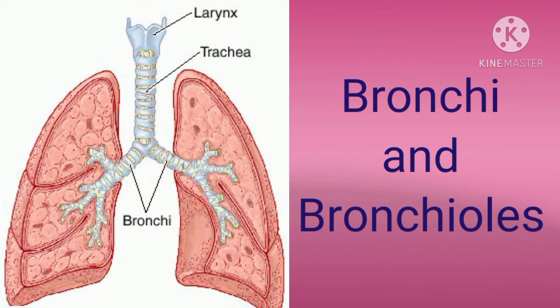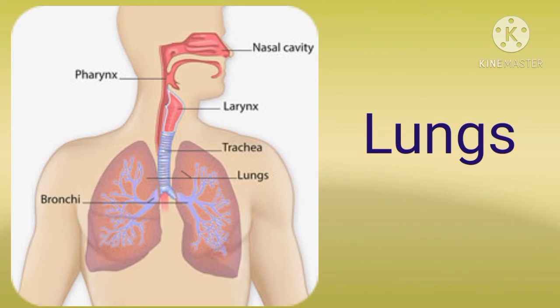Now we discuss about the bronchi and bronchioles. The trachea runs in the middle of the chest up to a short distance between the two lungs, where it divides into two bronchi. The singular of bronchi is called bronchus — the left bronchus and right bronchus. After passing through the trachea, the air enters each bronchus and finally enters the lung. In the lungs, air is pulled into the fine branches of the bronchi and even enters microscopic branches called bronchioles.